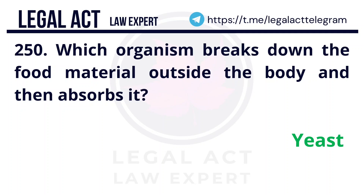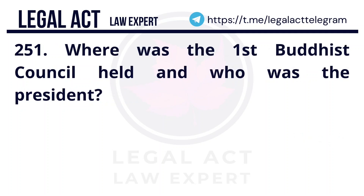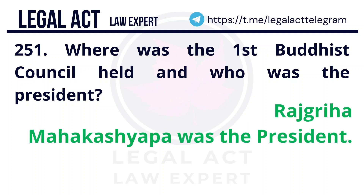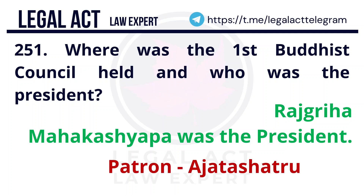Answer is Derived Demand. Question 250: Which organism breaks down food material outside the body and then absorbs it? Answer is Yeast. Question 251: Where was the First Buddhist Council held, and who was the president? Answer is Rajgriha; the president was Maha Kashyap. It was patronized by Ajatashatru.